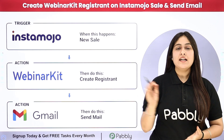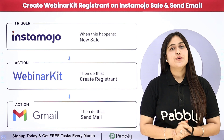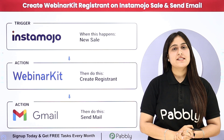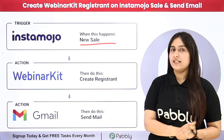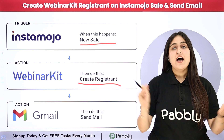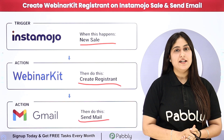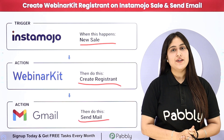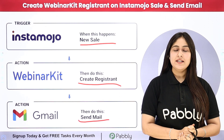I am running a developer academy and I keep creating new online webinars using WebinarKit. To receive payments for my webinar registration, I use Instamojo. Whenever I receive a new sale through Instamojo, automatically a new registrant should be created in my WebinarKit under a specific webinar. And after that, a confirmation mail should be sent to my customer using Gmail. To build this connection, I need to connect these applications using an automation software named Pabbly Connect. Let me take you to my screen.